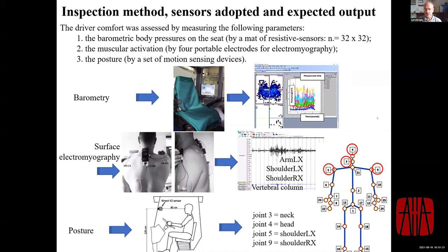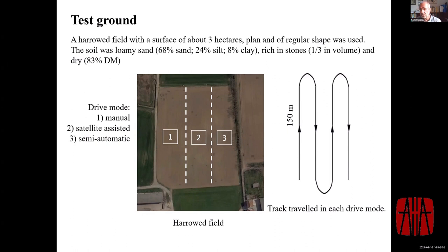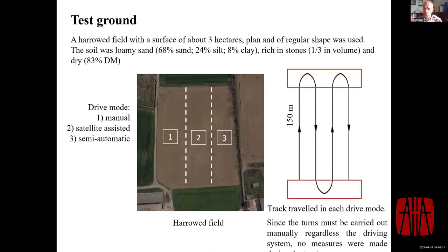The test field was a regular plane field, with the only problem being the quantity of stones affecting tractor vibration. The field was divided into three parts, each with a different driving system: manual, satellite-assisted, and semi-automatic. Turning measurements were excluded as headland turns are common to all three methods, and only the straight working lines were recorded.